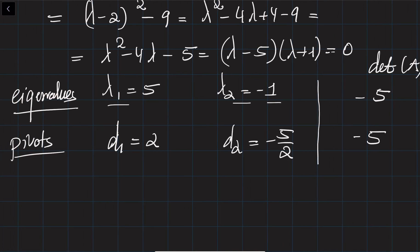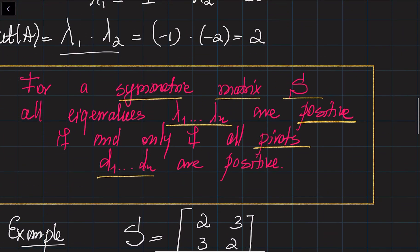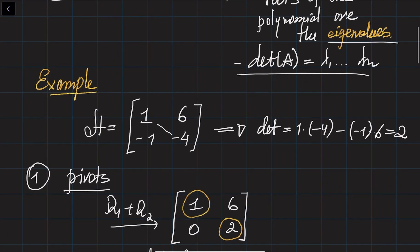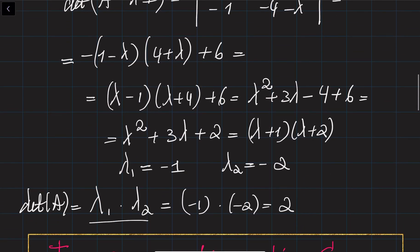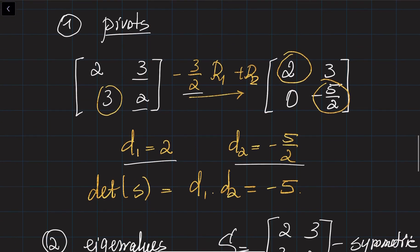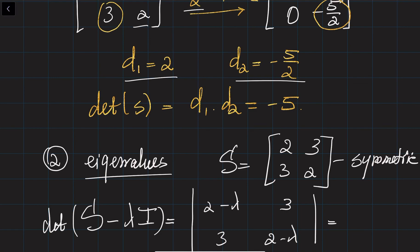For this symmetric matrix, the signs are the same: one positive eigenvalue and one negative eigenvalue, and similarly one positive pivot and one negative pivot. This holds true for symmetric matrices. This is not necessarily true for any matrix in general — in the first example, that matrix was not symmetric. Both pivots were positive (1 and 2), yet both eigenvalues were negative (minus 1 and minus 2). But for symmetric matrices, the signs of the pivots match the signs of the eigenvalues, and in our next lectures we will discuss how to use this fact.